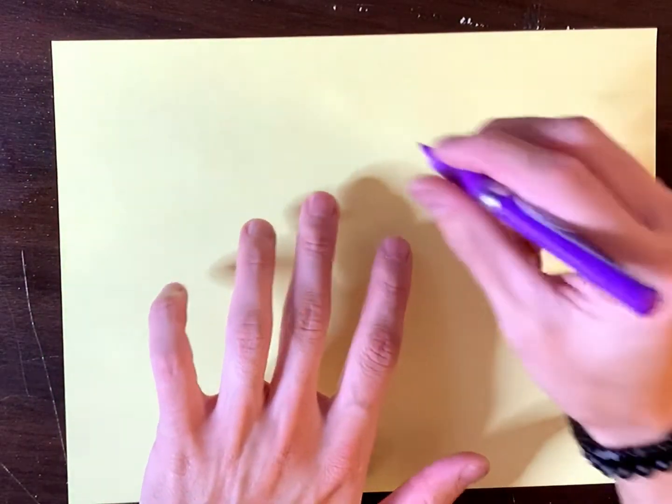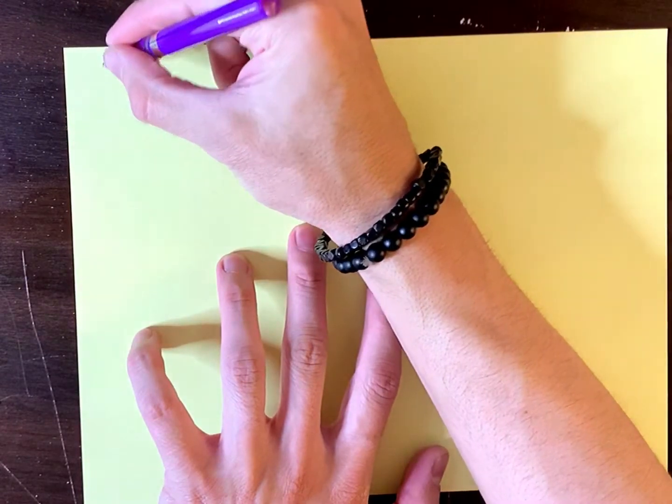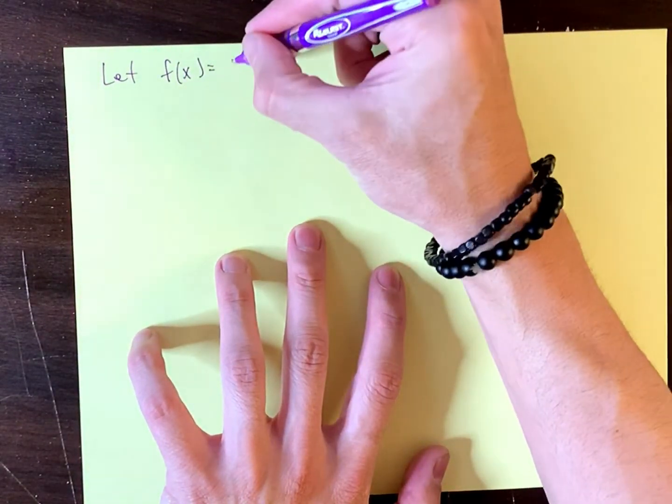All right, so let me make up a problem here that will hopefully communicate the idea. So let's say that we have a function f of x that has the following look to it,